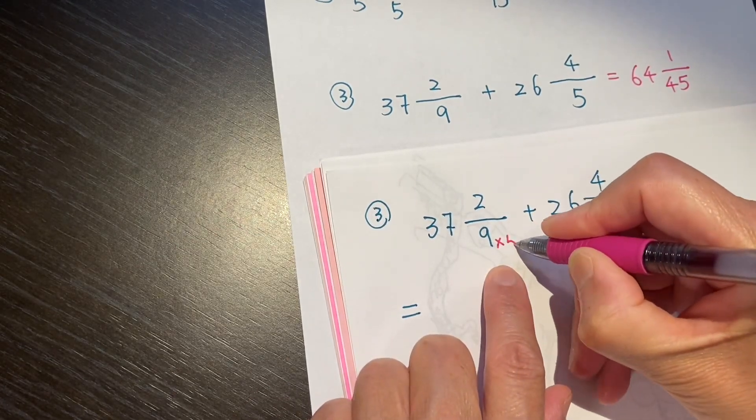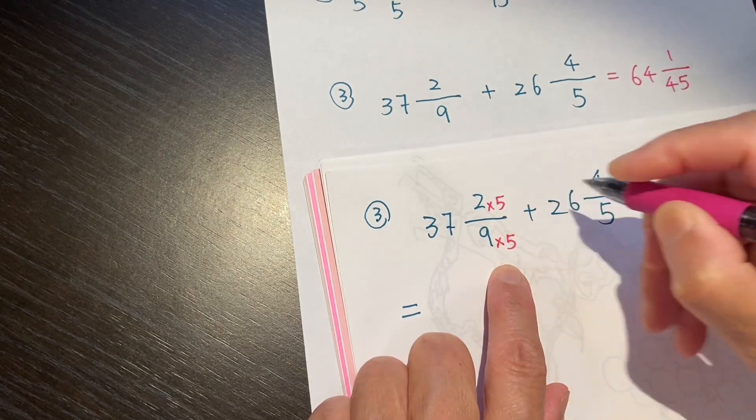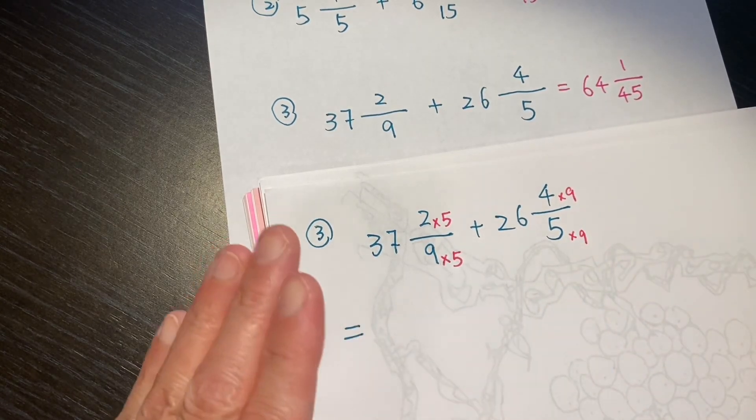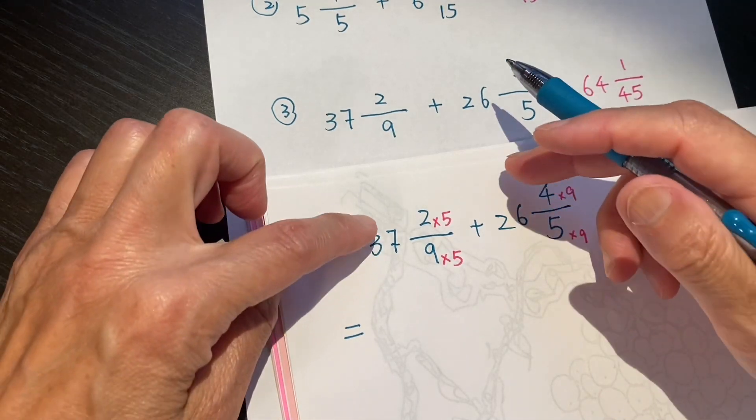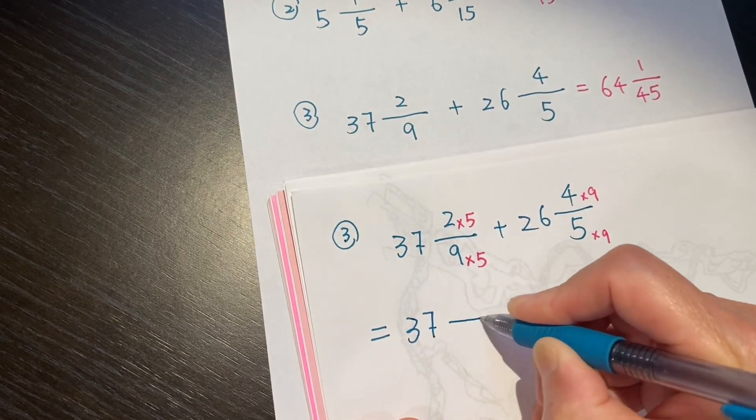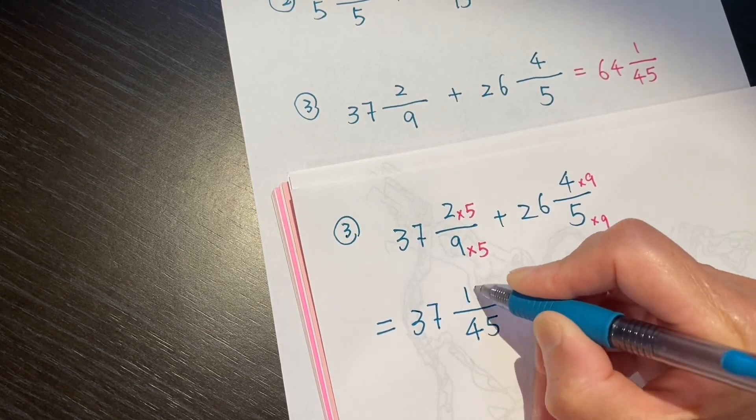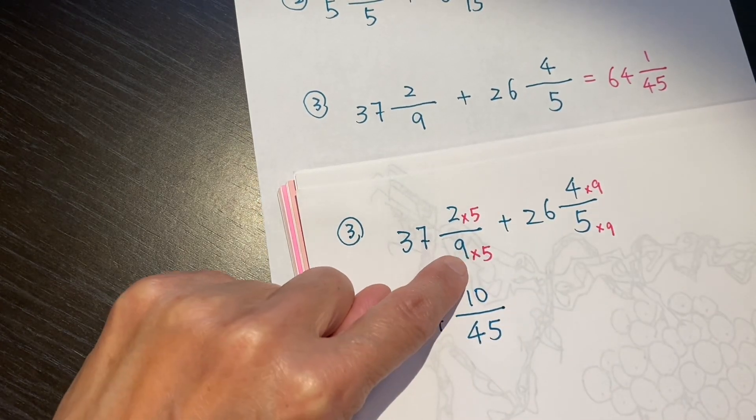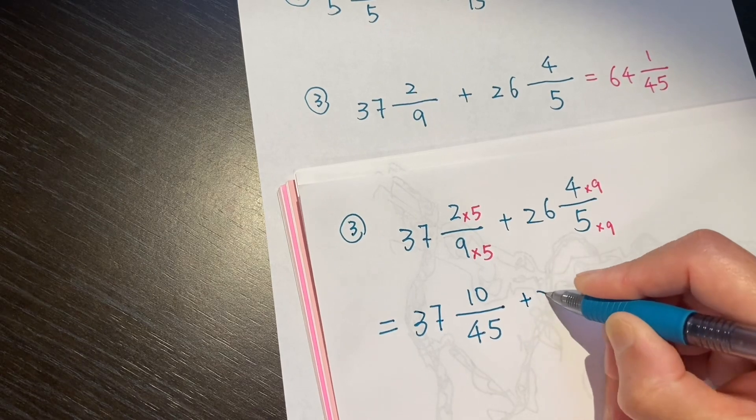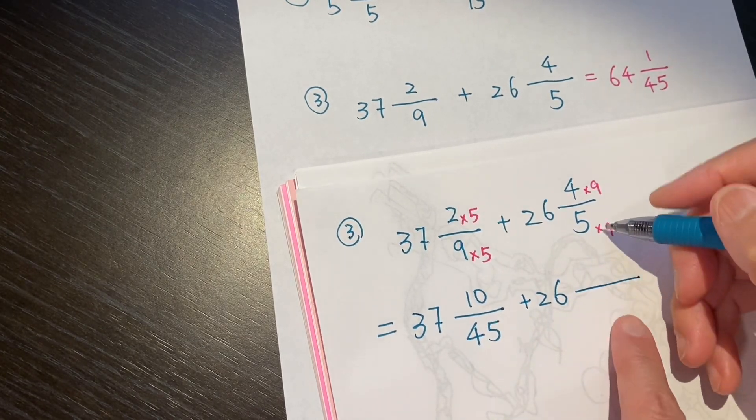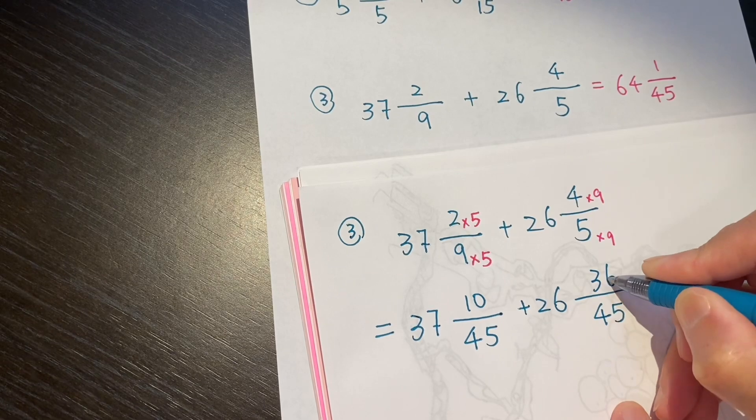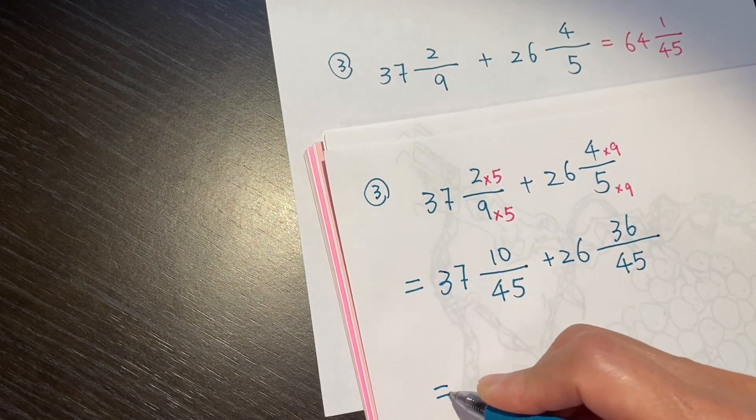So, the bottom need to time 5. Then, on top, I time the same number. And 5, I need to time 9. Time 9. Make it the same. So, this way, let me write it clear first. 45 and 10. On the bottom, the denominator is 45. The numerator is 10 plus 26. And, on the denominator is 45. The numerator is 36. Right?